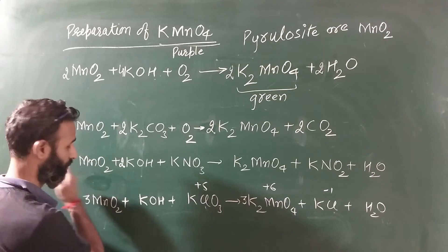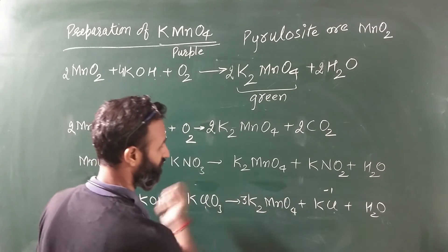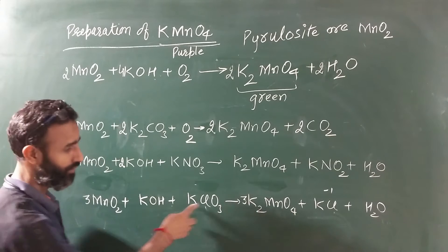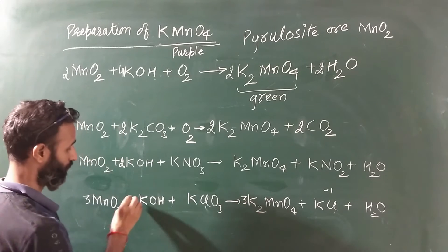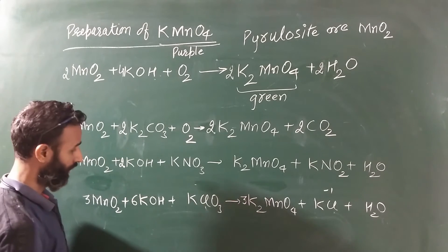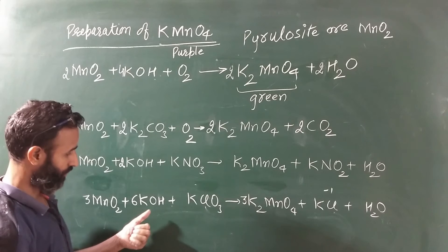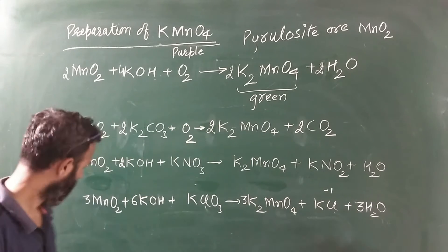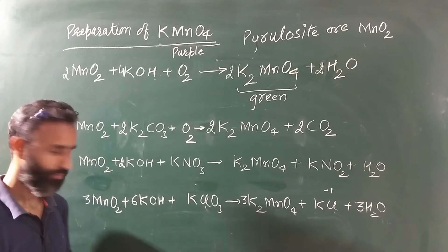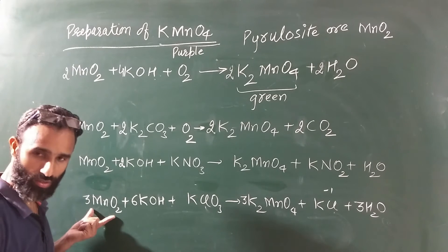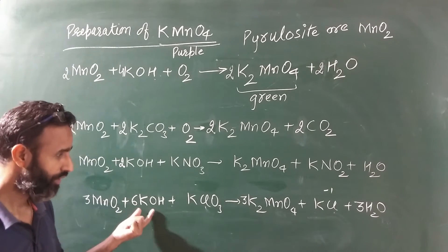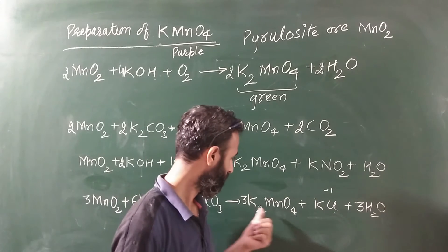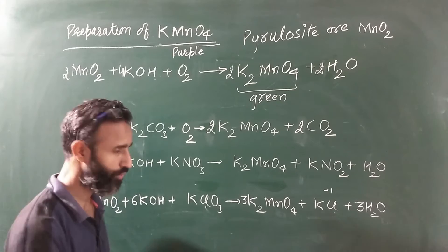Now balance it. So everyone has a coefficient — this is 6K, and if it is 6K then hydrogen is 6, so 3H2. 6 plus 6 is 12, 12 plus 3 is 15 oxygen. So hydrogen is balanced.